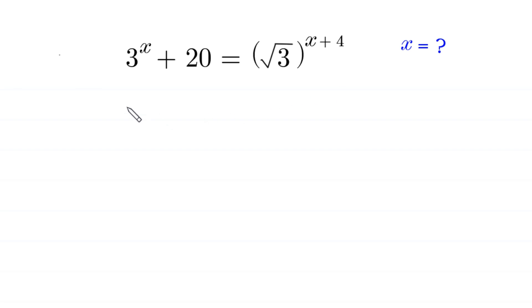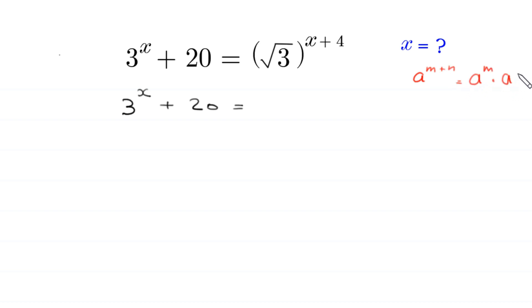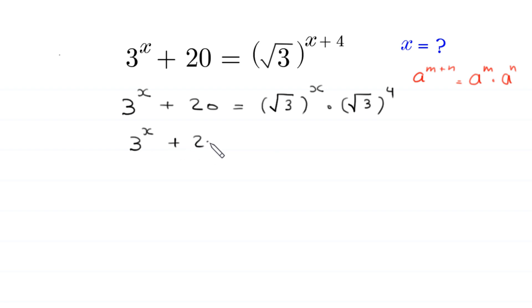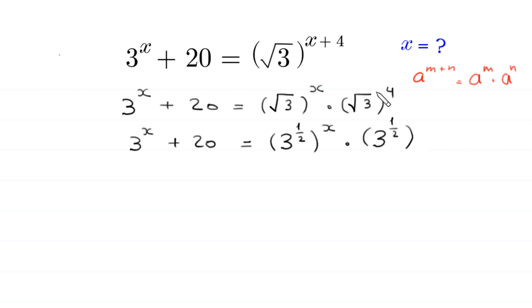Let us start. We have 3 to the power x plus 20 is equal to, and by using the power rule a to the power m plus n equals a to the power m times a to the power n, this expression becomes square root of 3 to the power x times square root of 3 to the power 4. Now the square root of 3 can be written as 3 to the power 1 over 2, whole to the power x, times 3 to the power 1 over 2, whole to the power 4.